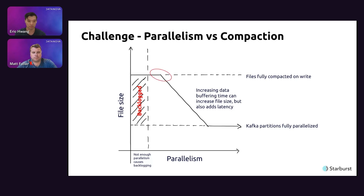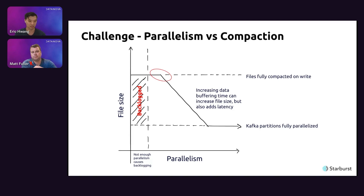You want just enough parallelism so files come out at a nice size, but not so much that it causes issues. This is different from most classic Kafka consumers, which optimize for increased parallelism whenever capacity is available. For ingestion, you actually want the opposite — you want to bring parallelism as far left as possible — and that's what our system does.